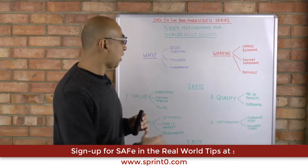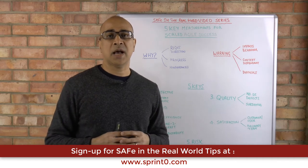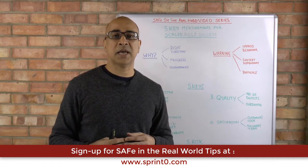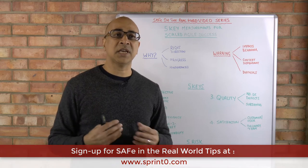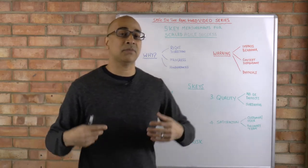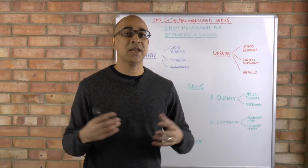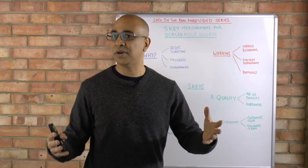So there we have it. I hope you found that useful. The five key elements that you need to think about when we are measuring our success in a scaled agile program. I look forward to seeing you in the next video when we're going to go into far more detail in terms of how do we actually measure value in a scaled agile program. Look forward to seeing you next week. Thank you very much, bye.